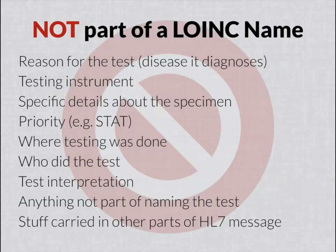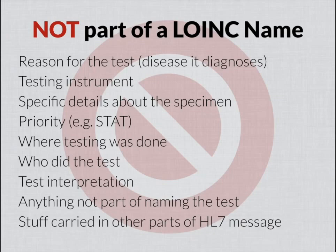It's important to think about what's not part of the LOINC name as well. The takeaway message is: anything that's not essential for uniquely identifying this observation is not included. That includes things carried in other parts of the HL7 message — things like the reason for the test, the disease it diagnoses, the actual instrument the testing is performed on, specific details about the specimen source, the priority, whether this is ordered stat or routine, where the testing was done, and who did the test. LOINC's role is to fit in that spot of identifying what the observation is; anything not essential to that role, we tend not to put in the LOINC name.